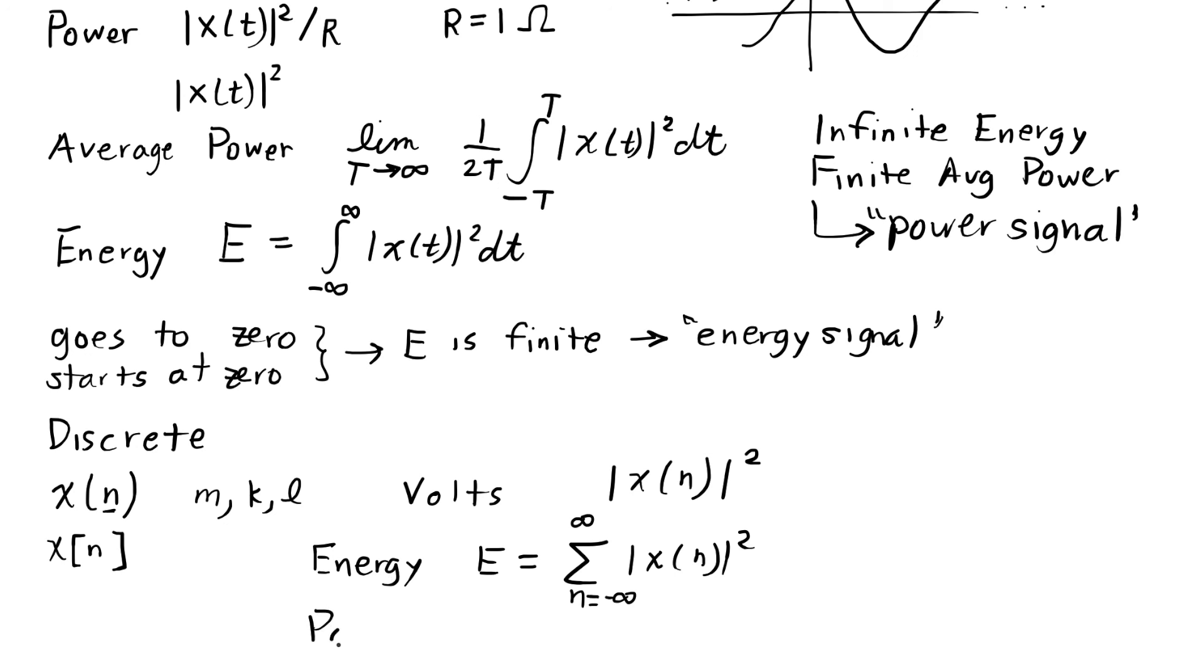And of course, we can still define power. We just pick some number, capital N, to kind of go to infinity. We'd have 1 over 2N, we'd pick the sum from n equals minus N to plus N, and actually that would be 2N plus 1 samples. So I divide by 2N plus 1 to get the average, and of course the value squared gives us that instantaneous power. So this becomes our average power.